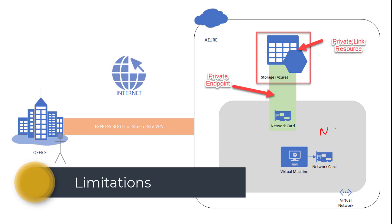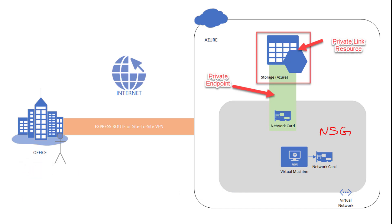The second point is about NSGs — Network Security Groups. Think of NSGs as firewalls that are applied on a subnet or directly on the virtual machine inside your virtual network. The limitation is that the subnet can have NSGs, and other resources such as this virtual machine will honor those NSGs. But the private endpoint and the private link resources will not follow those NSGs. This is a known limitation.